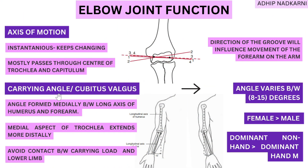Looking at the axis of the humerus and ulna, we see something called the valgus angle, also known as the carrying angle or cubitus valgus. This is the angle formed between the long axis of your humerus and the long axis of your forearm — approximately 8 to 15 degrees. Females have a higher carrying angle compared to males, and the dominant hand has a higher carrying angle compared to the non-dominant hand.